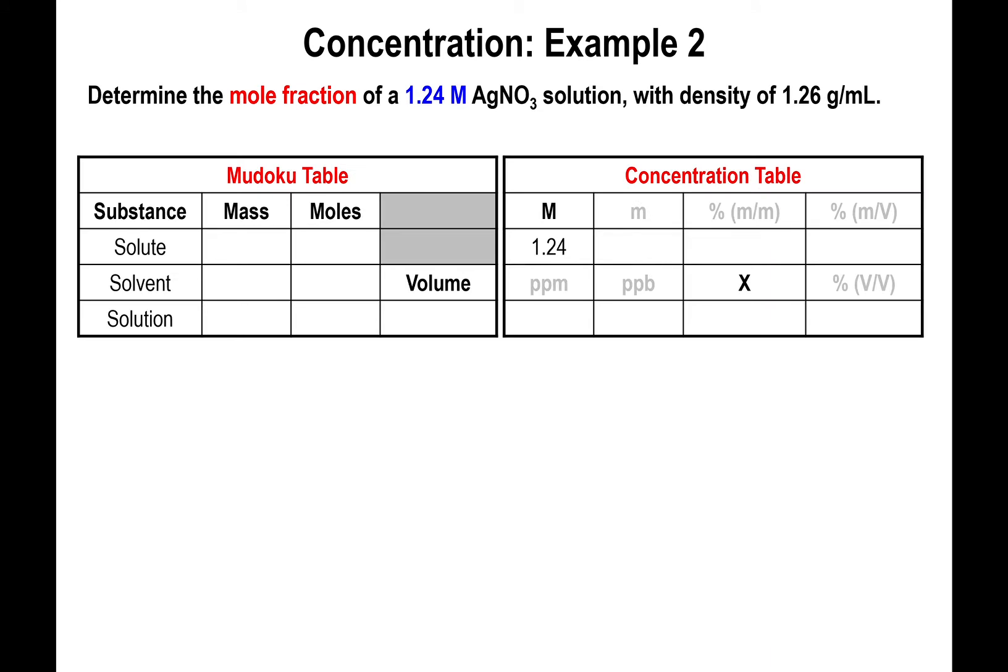In order to do this, we want to complete the Mudoku table first. We don't need to fill out the entire concentration table—all we need is the mole fraction. But we're going to need most of the key players in the Mudoku table to carry that out. The way you want to start the problem is by focusing on the concentration you have and breaking it apart into its components.